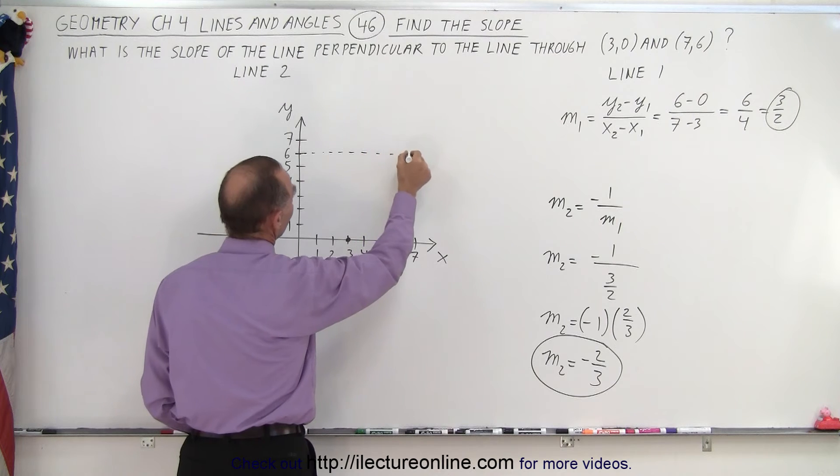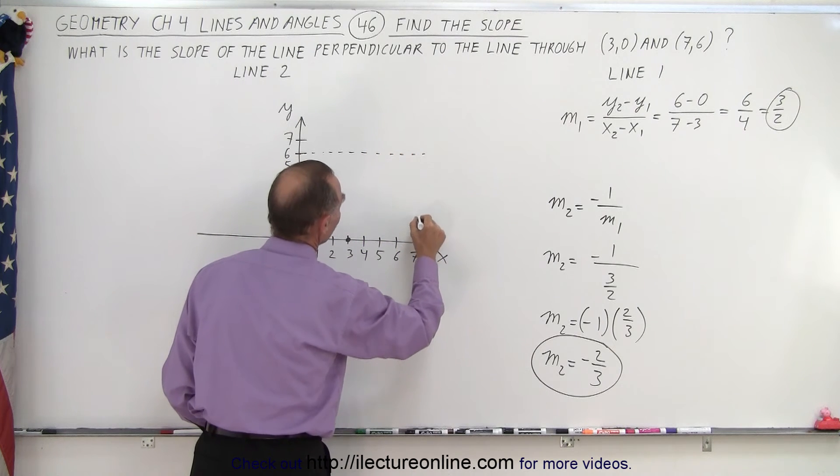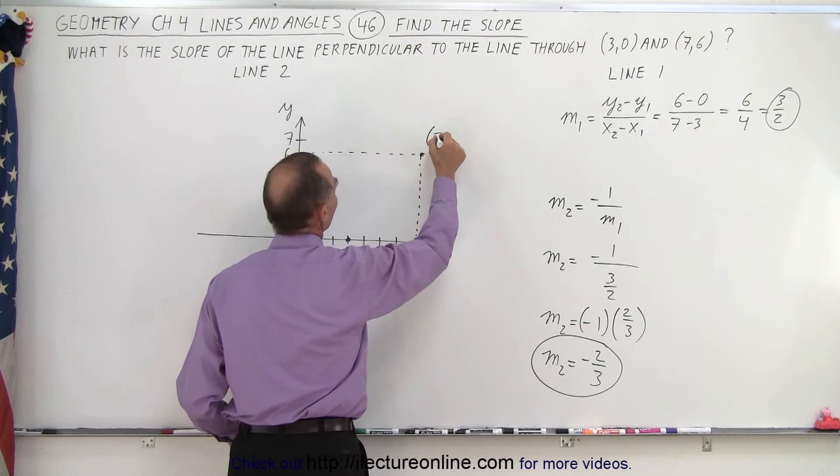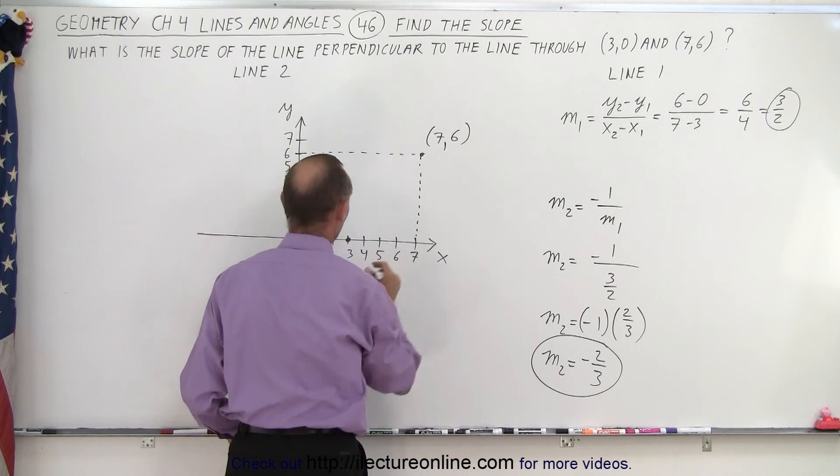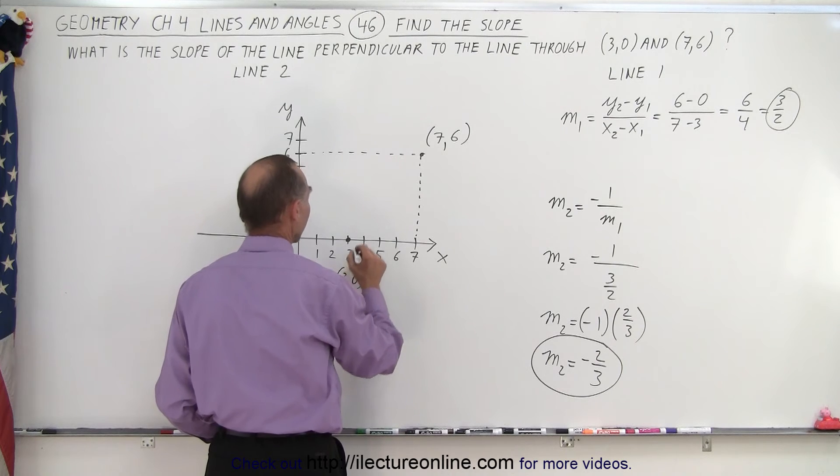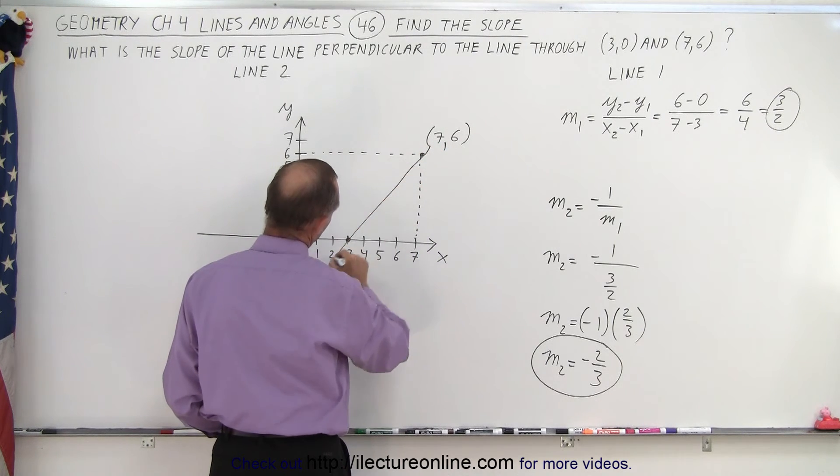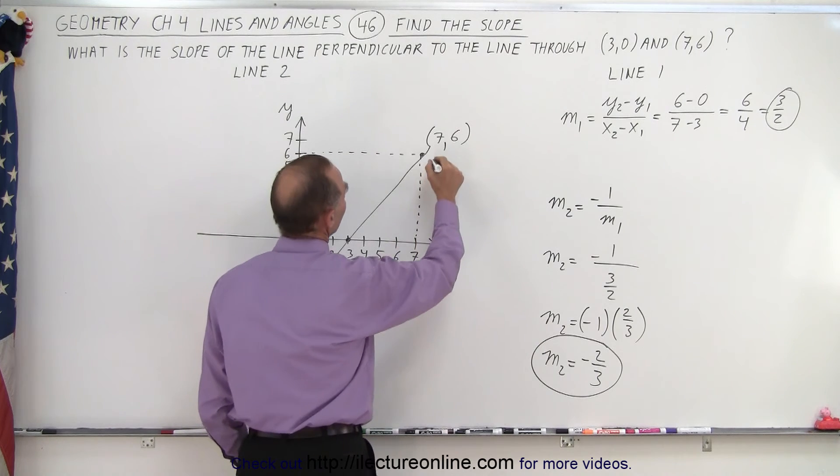So for the y-value, we get 6. For the x-value, we get 7. So this is the point (7,6). 7 for x and 6 for y. Here's the point (3,0). And then if we connect those points, so there is line 1.